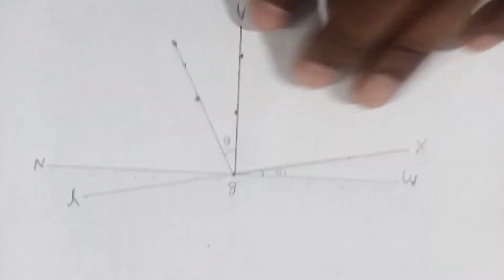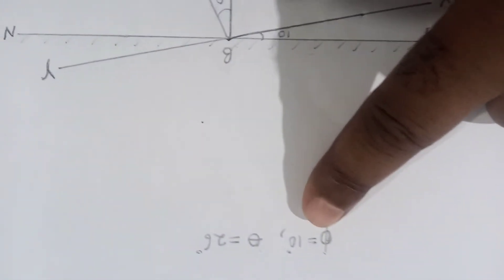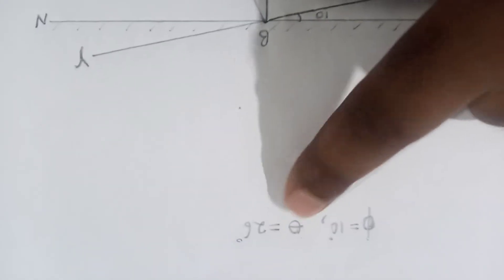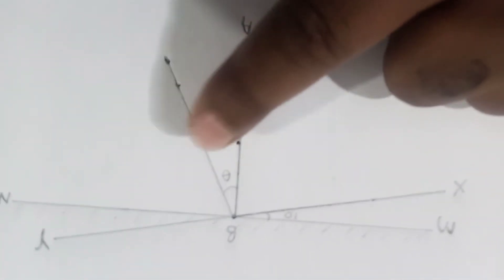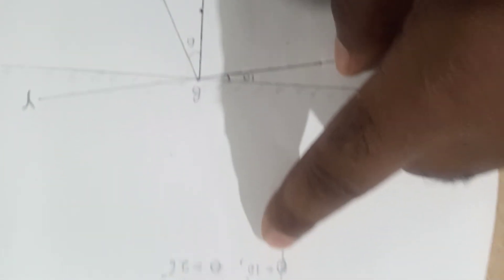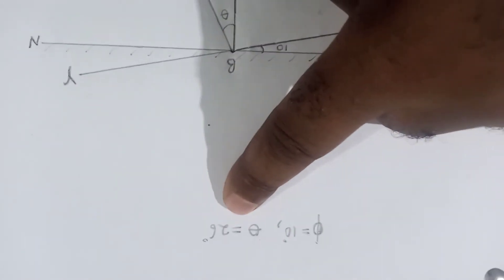Recording this angle is actually represented as phi in the question. So the summary of what I've done now is that when phi is equal to 10, the theta that I got, I measured this angle here and it gave me 26. So when phi is equal to 10, then theta is equal to 26.